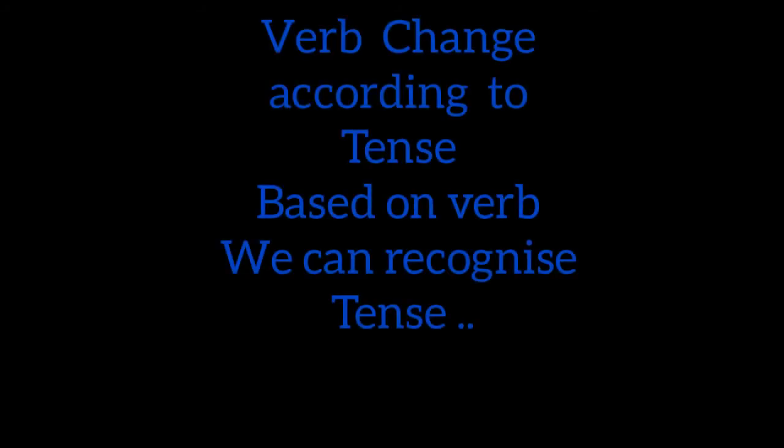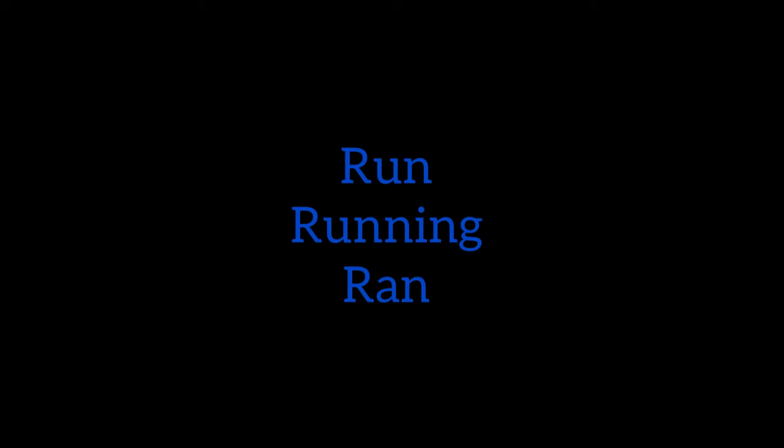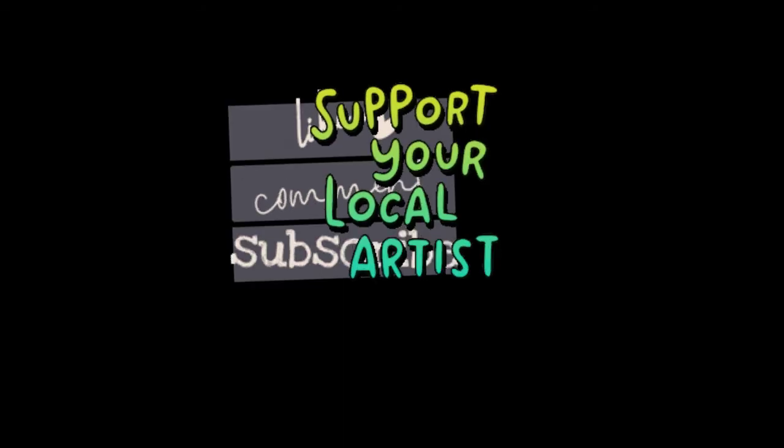So now let's discuss why we are talking about verbs first. A verb changes according to the tense, and based on the verb we can recognize the tense as well. For example, 'run' is present tense, 'running' is continuous tense, 'ran' is past tense, and 'will run' indicates future tense.